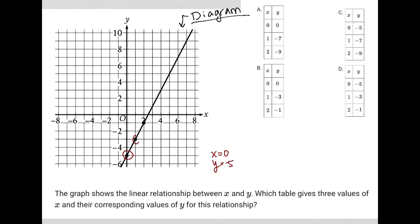We also have this point provided here, which corresponds to x equaling 1 and y equaling negative 3. And we have this point provided here which looks like when x is 2, y is negative 1. I'm pointing those out because the question points them out, so I want to make sure I'm paying attention to what the question gives me.